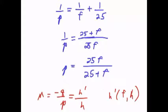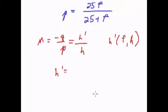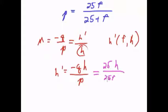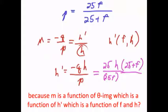So let's first solve this thing for h prime. We'll have h prime equals, we'll just multiply that by h. So it'll be negative q h over p. Now q, we already said, was negative 25. So that's negative negative 25 which is 25 h over p is this 25f over 25 plus f. And that's the function that I was looking for, h prime as a function of f and h.